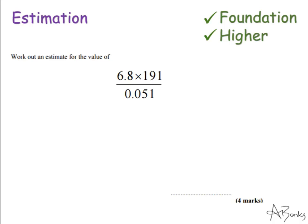I'm going to start by writing my approximately equal to symbol, which looks like this. And I'm going to round every number to one significant figure. So 6.8 to one significant figure — 6 is the most significant figure, but it's going to round up to 7. And for 191, the 1 in the hundreds column is the most significant figure, but it's going to round up to 200 because of the 9 next to it. So that is 200 to one significant figure.